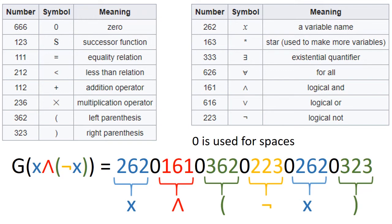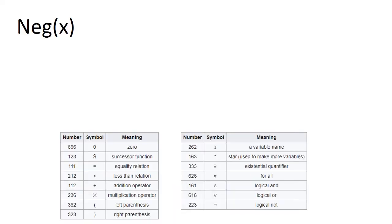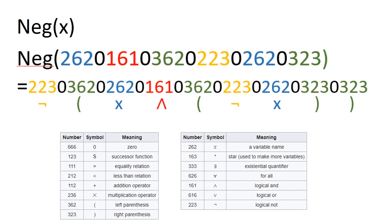Now with the natural number associated with every formula, we can define the properties of logical formulas using numbers. For example, we can have a function negation of x on numbers which sends x, which is a natural number, to the Gödel number of the negation of the logical formula associated with x.